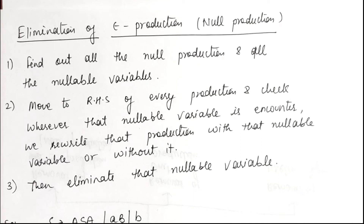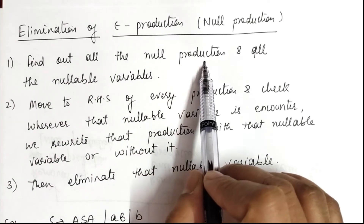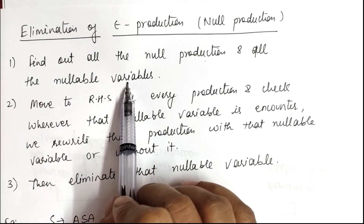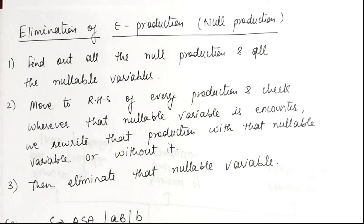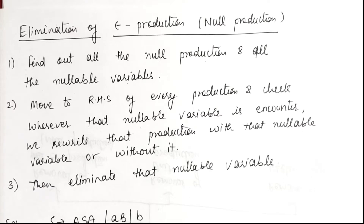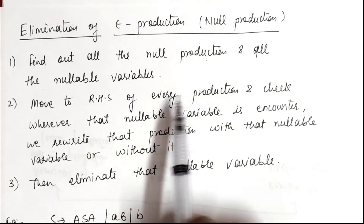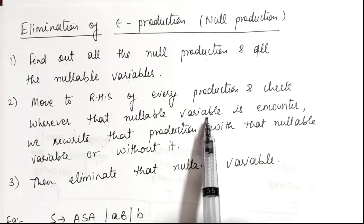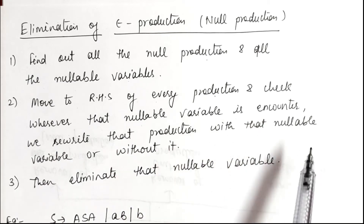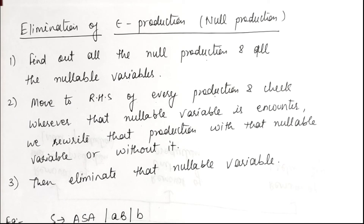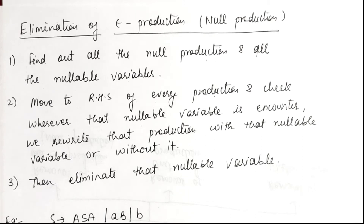For elimination of null production or epsilon production, we first find out all the null productions in the grammar and also find out the nullable variables. Nullable variables are those variables which contain directly or indirectly the epsilon production. After finding the nullable variables, we move to the right hand side of every production and wherever that nullable variable is encountered, we rewrite that production with that nullable variable or without it. Then as the third part, we eliminate those nullable variables.